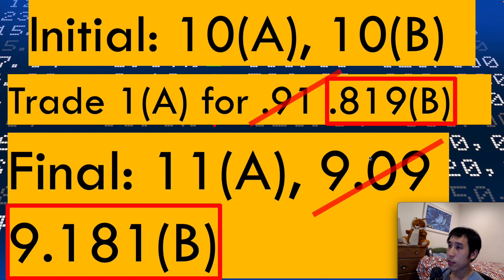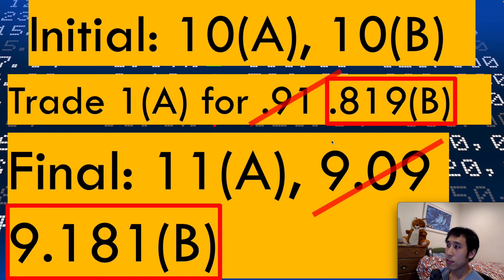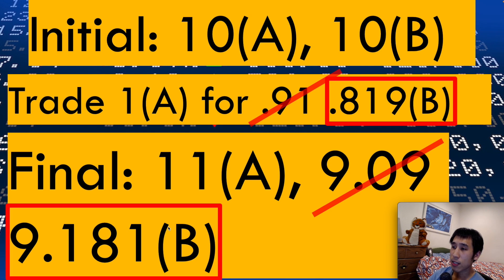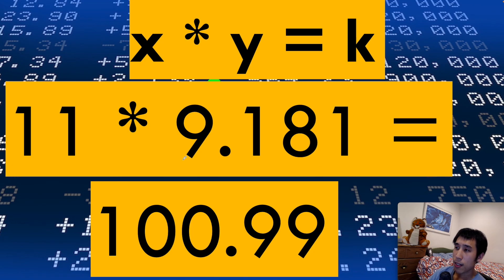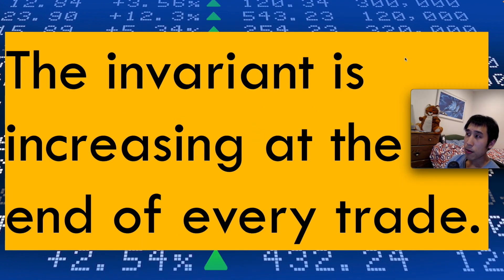Let's see how our previous example works with a 10% transaction fee. We still have an initial supply of 10 A and 10 B, and we're still passing in one token A. However, we're not going to get back 0.91 tokens of token B — the DEX keeps 10% of what we passed in. Therefore, we are only going to get back 0.819 tokens of token B. After the transaction, the DEX has 11 tokens of token A and 9.181 tokens of token B — not 9.09. When we multiply these two supplies together, the product K is now 100.99, which means the invariant is increasing at the end of every trade when transaction fees are involved.